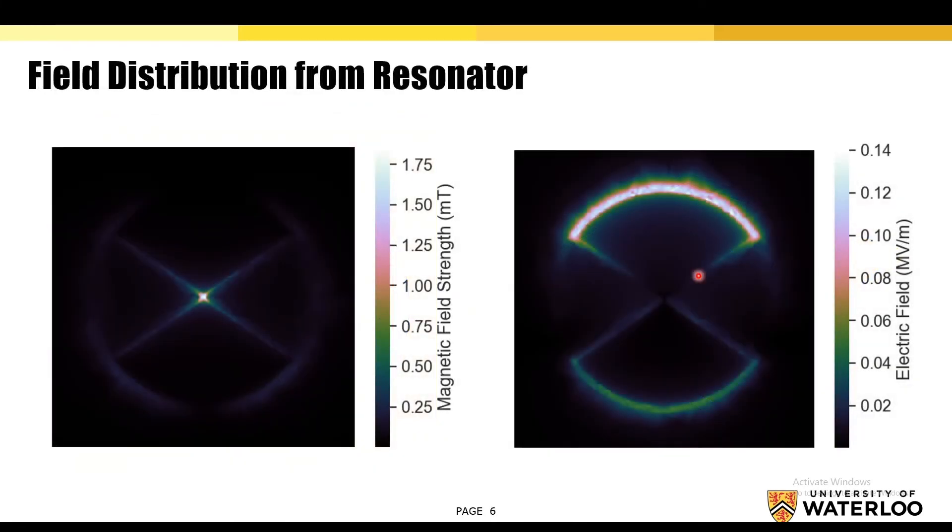In order to validate that we're able to produce a strong magnetic field with this resonator, we perform some simulations. And so on the left hand side here, we can see that there is a strong magnetic field being produced by the resonator near the center of the resonator.